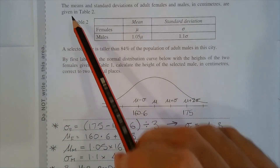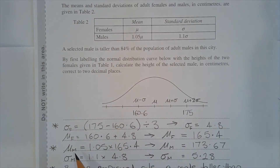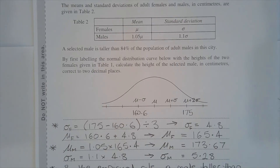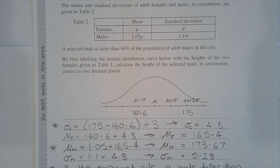Referring to Table 2, the mean of the male population is equal to 1.05 multiplied by 165.4, which equals 173.67 centimetres. And the standard deviation of the male population is equal to 1.1 multiplied by 4.8, which equals 5.28 centimetres.